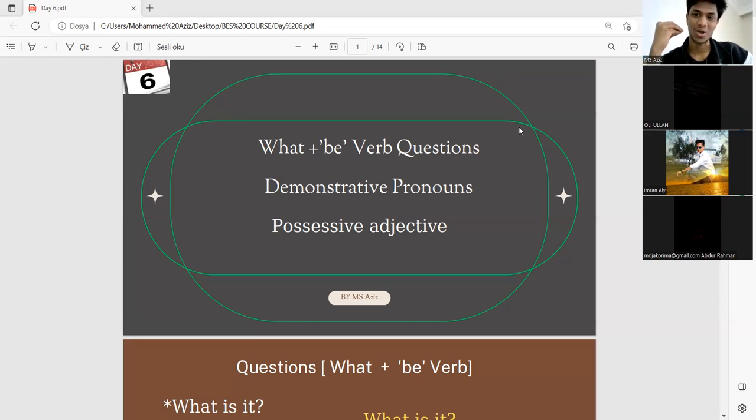This is the case. So if you have a possessive adjective, you can use it. For example: my phone, what is it? Our phone. My laptop, our laptop. My book. This is the case of possessive adjective.